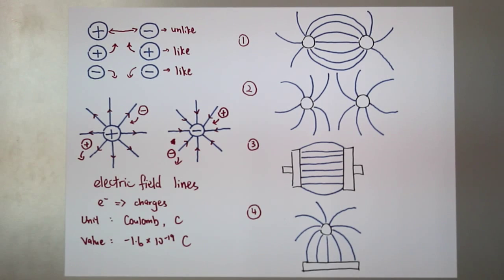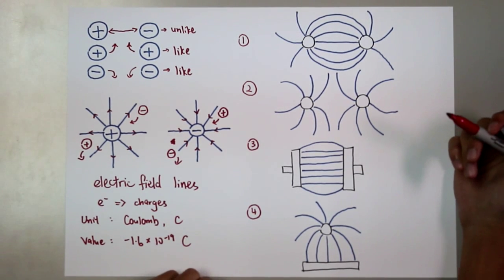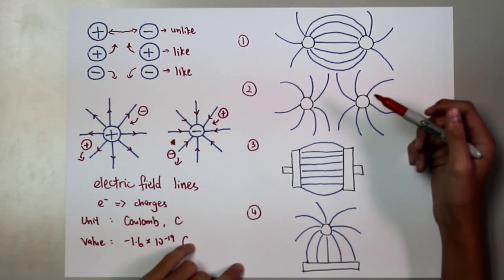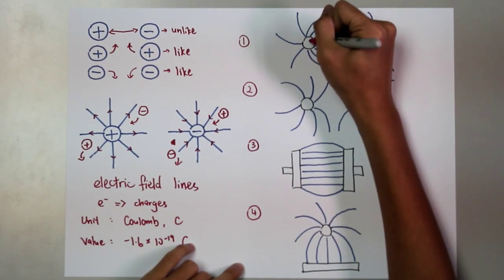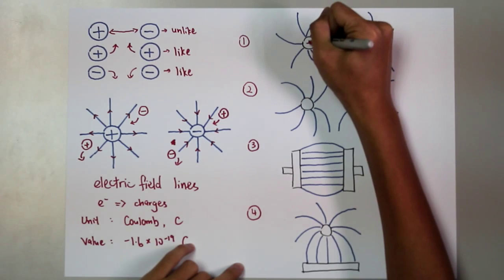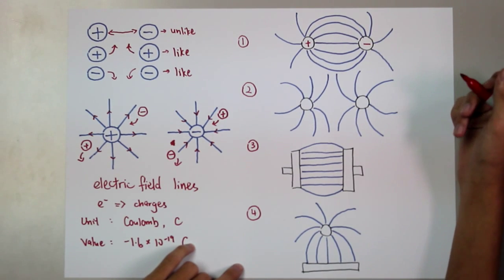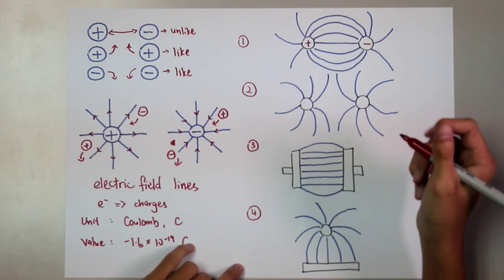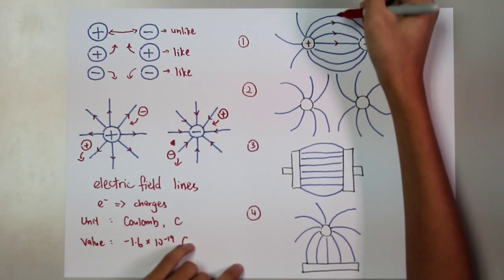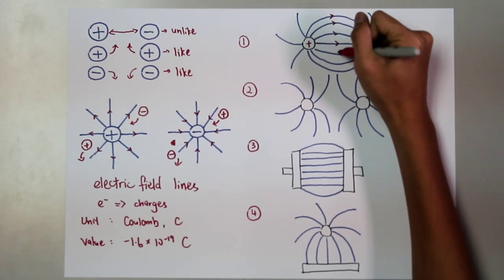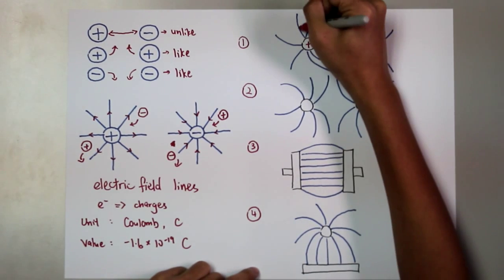I'm going to show you different types of electric field lines under different conditions. The first condition: where there are two unlike spherical charges — I assume this as positive and this as negative. The direction of electric field lines will be pointing from the positive charge towards the negative charge.